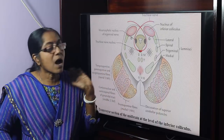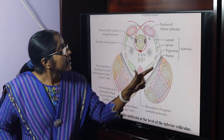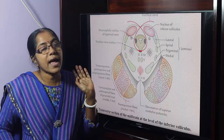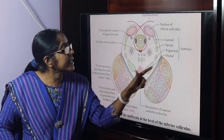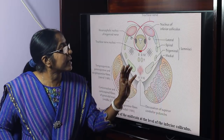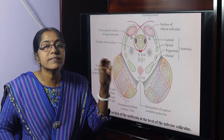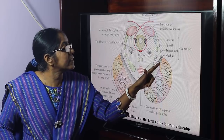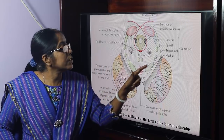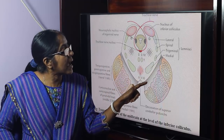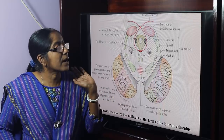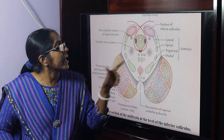Posterior to the crus cerebri is the substantia nigra, which contains neuromelanin — a dark-colored pigment.